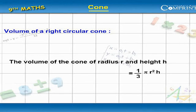Volume of the cone of radius r and height h equal to 1 by 3 pi r square h.